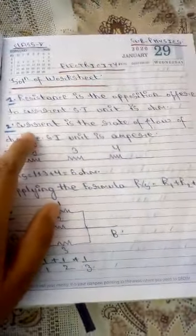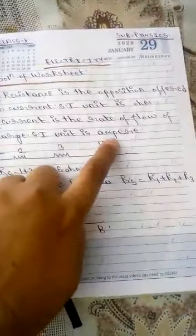Second question, what is current and what is the SI unit of current? So current is the rate of flow of charge and the SI unit is given by ampere.